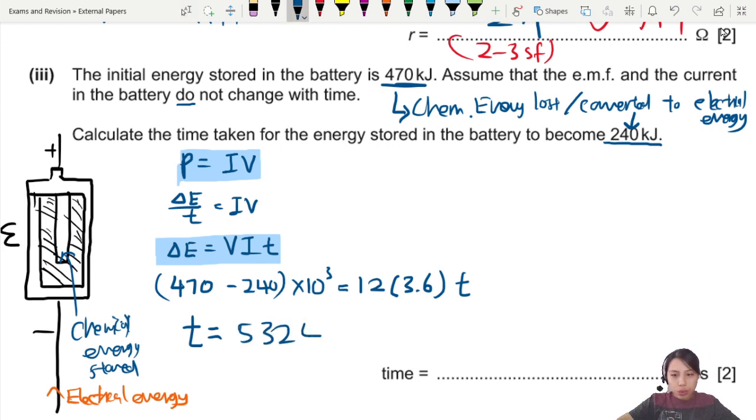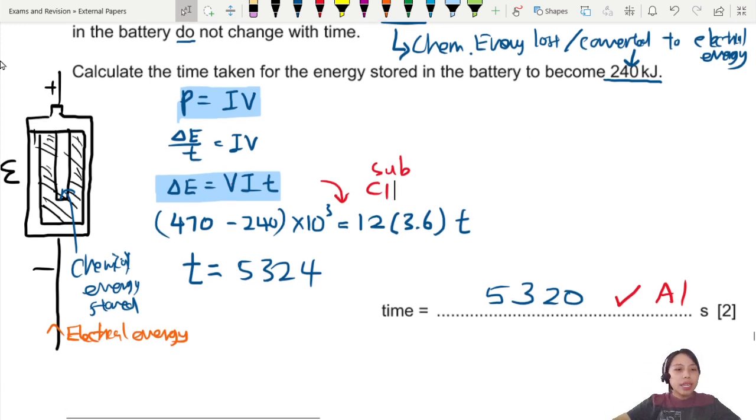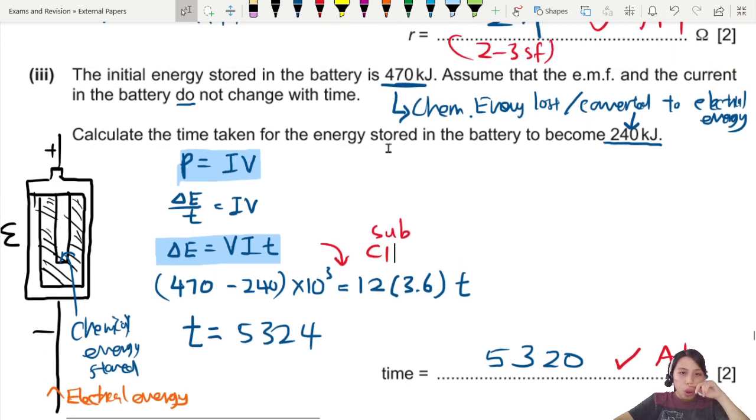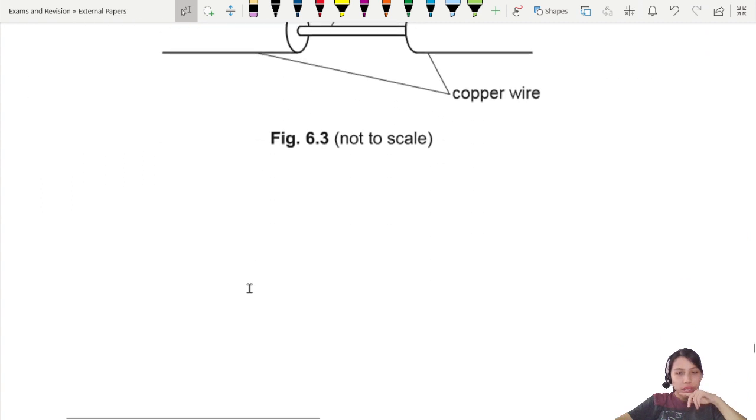Just write 5320. So this will be one mark. The other one is probably substitution or usage of one of the equations, P-I-V-E, but E-V-I-T also can. Make sure you sub in the correct values. Let's remember, chemical energy is being converted at a certain rate. Energy stored, you could call it chemical potential energy or something like that. Let's move on to the last part.